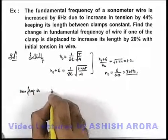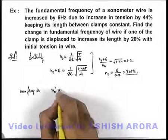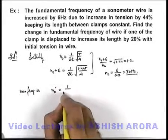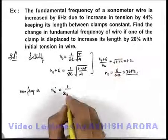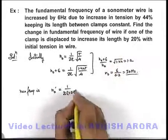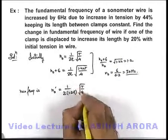is, say, n₀ dash. So we can write it: 1 by twice of length - it is saying it is changed by 20 percent, so it can be written 1.2L - root of T by mu.